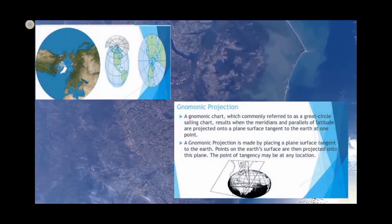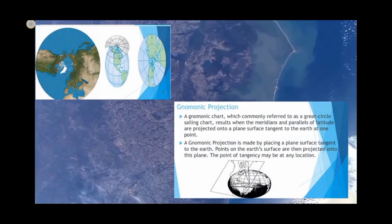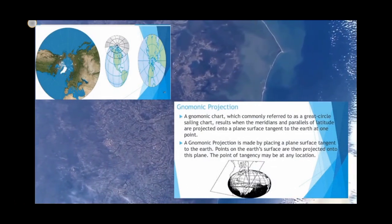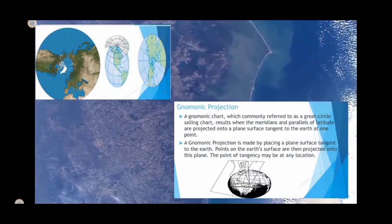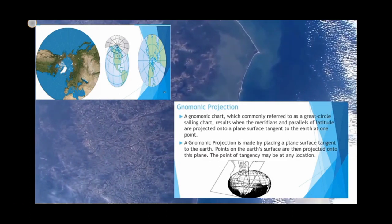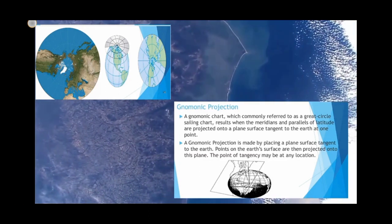Gnomonic projection is made by placing a plane surface tangent to the Earth. Points on the Earth's surface are then projected onto this plane. The point of tangency may be at any location.